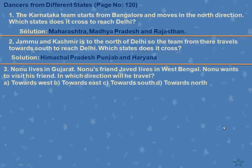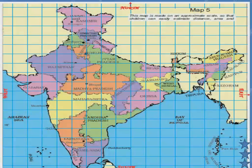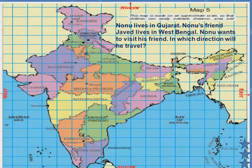Next question: Nonu lives in Gujarat and his friend Javed lives in West Bengal. Nonu wants to visit his friend. In which direction will he travel? So where is Nonu living? Gujarat. And where is Nonu's friend? West Bengal. Nonu has to go to his friend's house — so which direction will he go?